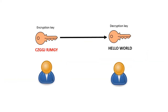Encryption is a method of transforming data into an unintelligible form so that it cannot be read by unauthorised individuals. Data is encrypted by means of an algorithm and a key being applied. The two main methods of encryption are symmetric and asymmetric.